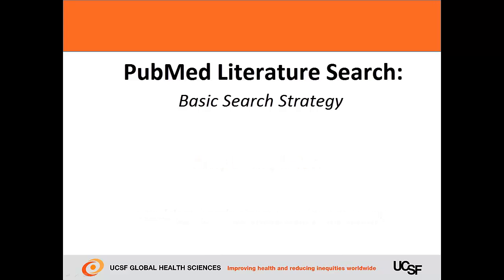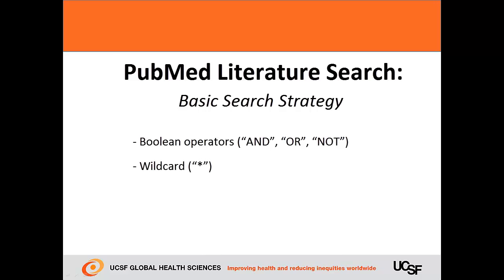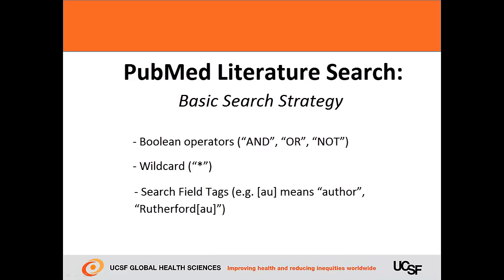Here are some tools that can help you. There are Boolean operators, which include the words AND, OR, and NOT. You can use a wildcard with the asterisk symbol, or star. You can use what is called a PubMed search field tag with brackets — for example, AU in brackets means author, so you can enter Rutherford [AU] to search for articles written by Rutherford. You can also use filters to narrow and limit your search.